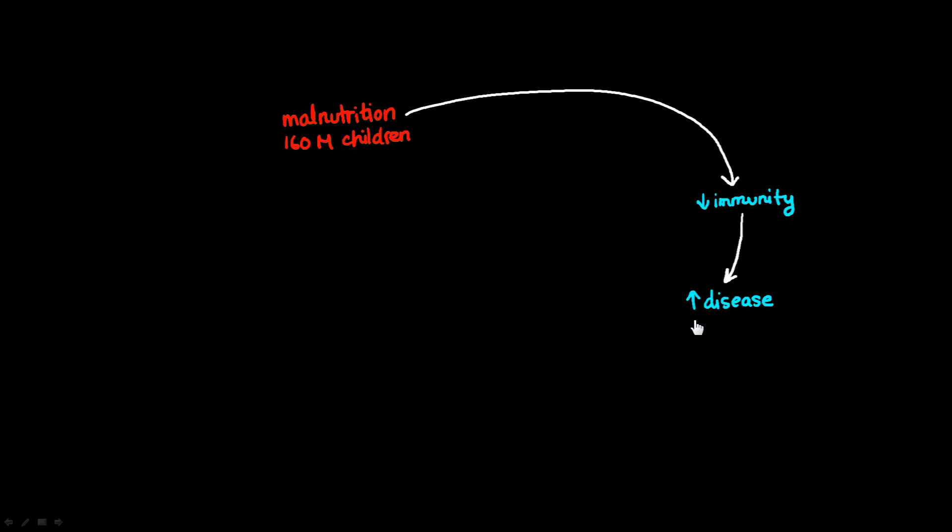Another thing that malnutrition does is that it inhibits or it slows down both the growth, the physical growth of a child, so that's increases in weight, height, and head circumference, and then also it inhibits or slows down the development of the child. And when we're talking about development, we're talking about maturation of the child. And development can occur either with or without physical growth.